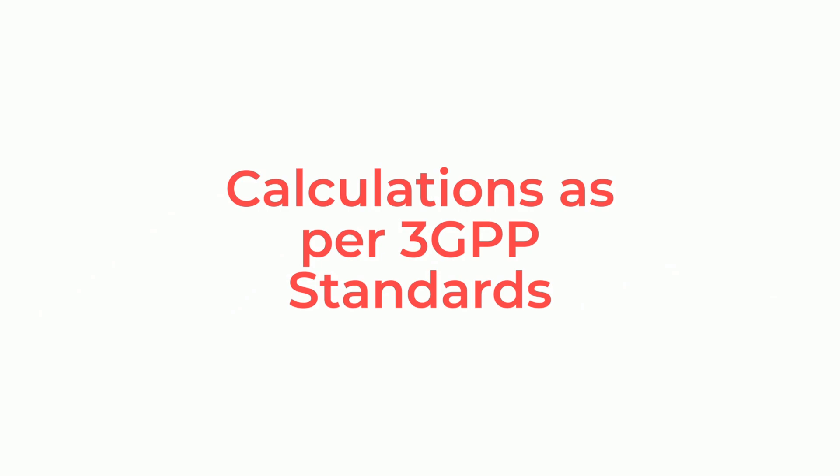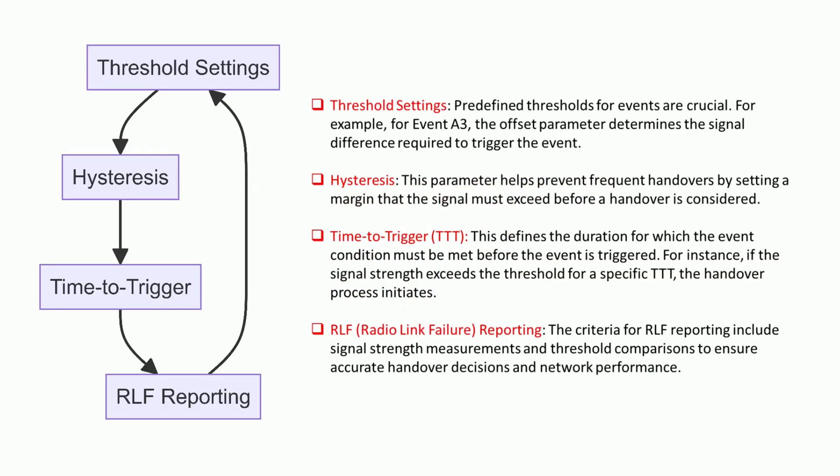Threshold Settings. Predefined thresholds for events are crucial. For example, for event A3, the offset parameter determines the signal difference required to trigger the event.